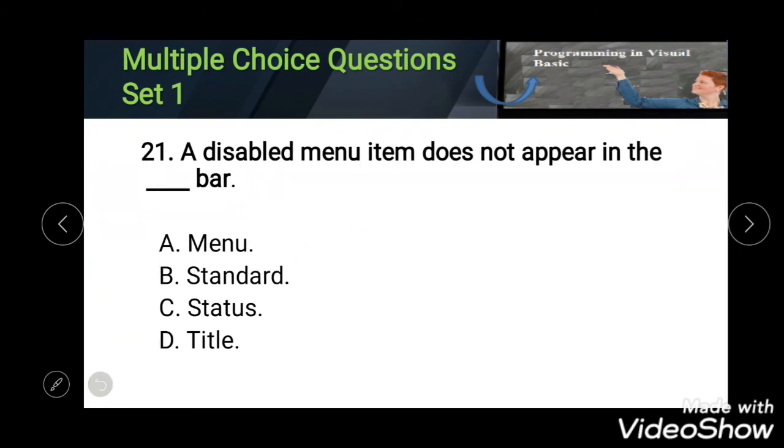Twenty-first: a disabled menu item does not appear in the blank bar. Options: Menu, Standard, Status, and Title. The correct answer is Menu.